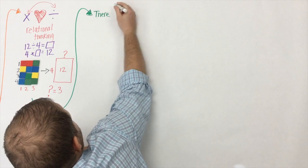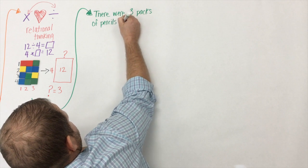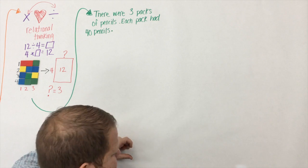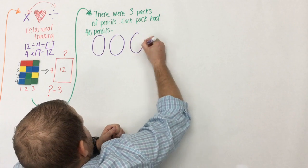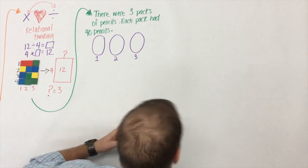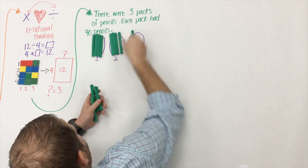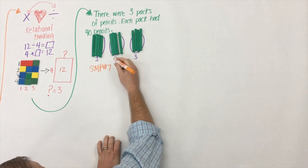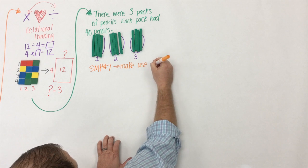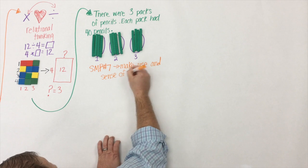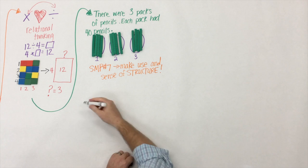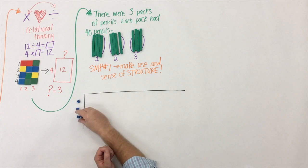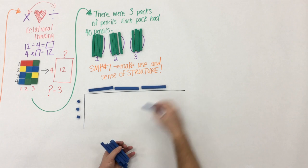Here's a simple context: there were three packs of pencils and each pack had 40 pencils. At the beginning of multiplication, students might draw three circles and in each circle put in four ten-rods representing 40, or they could draw 40 little pencils. That's great, but the Standards of Mathematical Practice — particularly number seven — want us to be efficient and make use of structure so that we make sense of it.